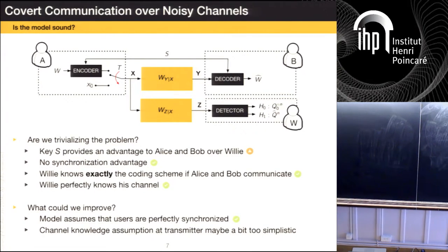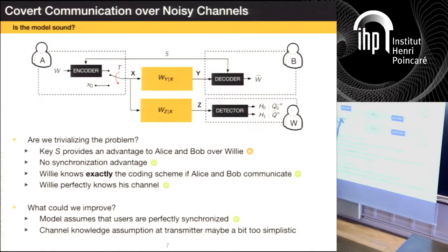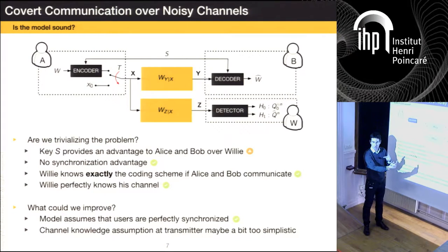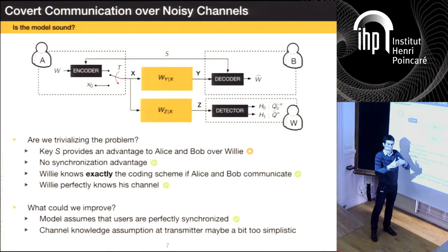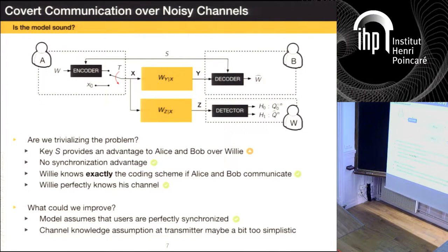Let me clarify the parameters once and for all. N is the number of channel uses. I have a message W which takes M different values, which I encode into N channel uses — so N independent applications of the channel. I'm assuming a product distribution. The analysis is first done in a pure one-shot setting and then specialized to the IID setting to get a nice expression.